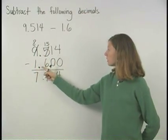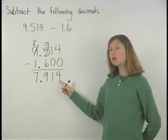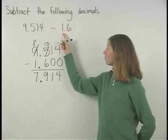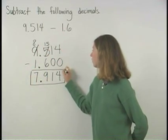Finally, remember to bring down the decimal point. So we have 7.914. So 9.514 minus 1.6 is 7.914.